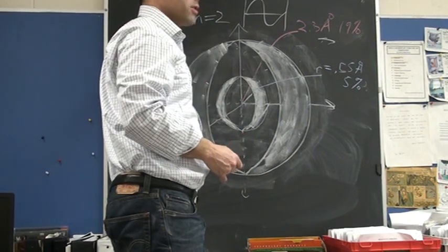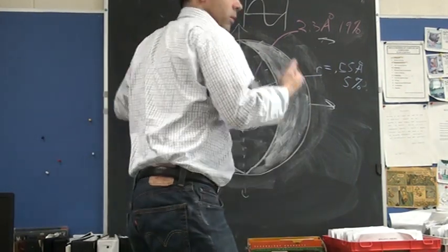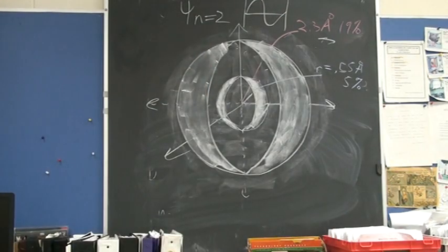So, where is there 0% chance of finding the electron? Where is there 0% chance, Lauren? Where? In the center. At the nucleus.